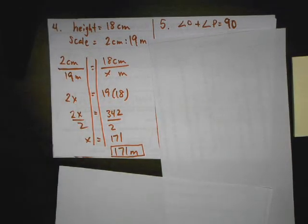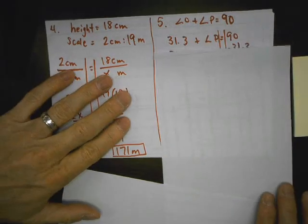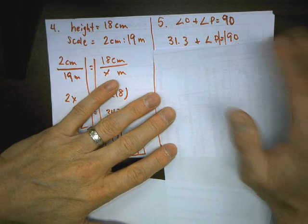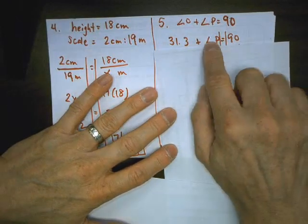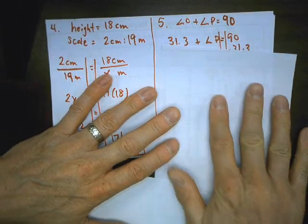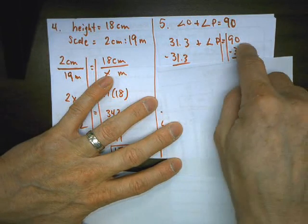Number five, they tell us that two angles are complementary, angle O and angle P. And complementary means when you add them up it equals 90. So angle O they give us is 31.3. Angle P they didn't. So this is just an equation we're going to solve by isolating this to see what this is. So again, when I move something I do the inverse operation. So if it's positive 31.3, I subtract 31.3.